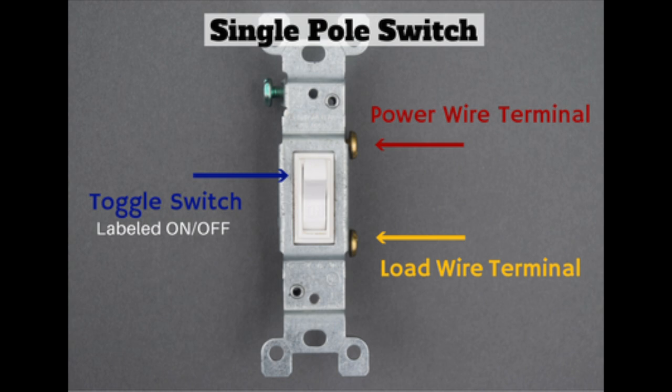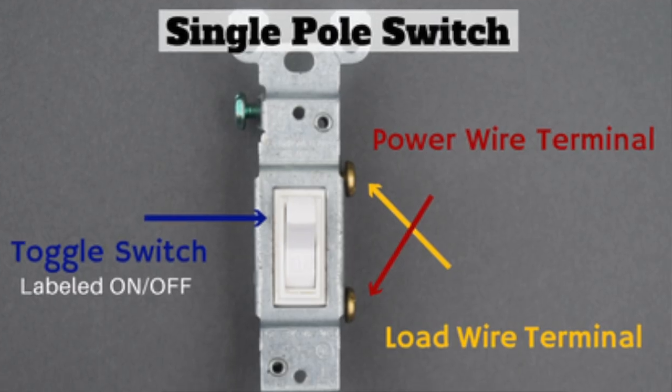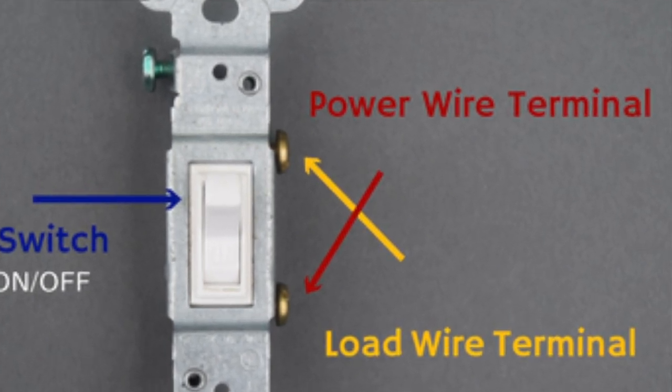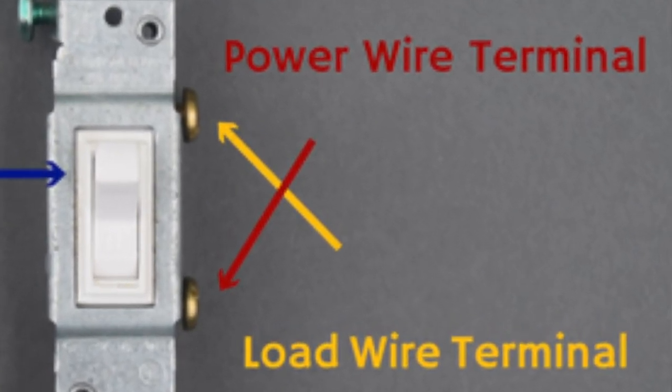Here is a single pole switch. Notice that there are just the two brass screws. It gets two wires. One of them will be the power wire and the other wire that you hook up will be our switch leg or load, which goes to the light. With a single pole switch, it doesn't matter which wire goes to which screw. It works either way.